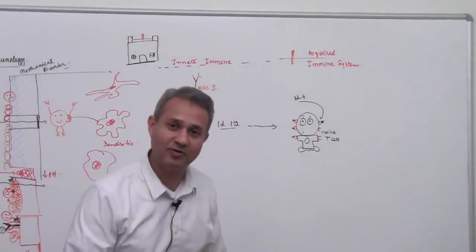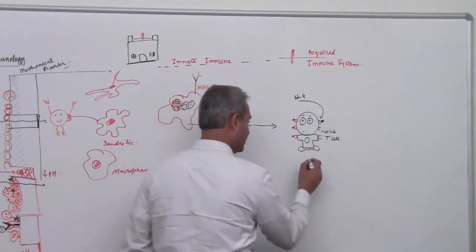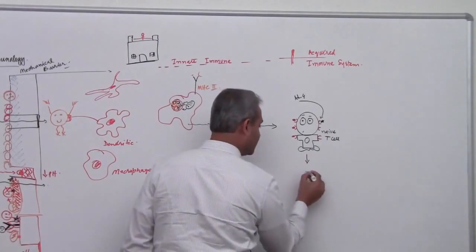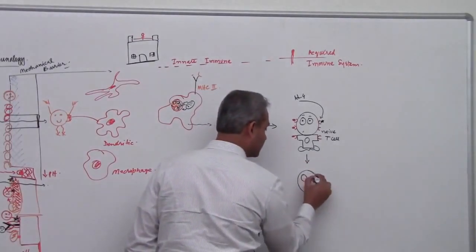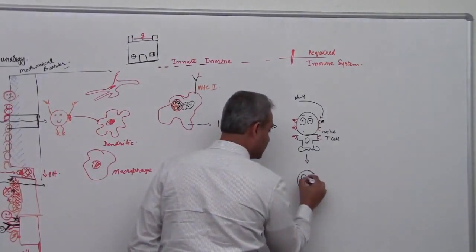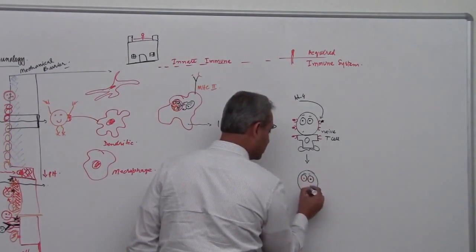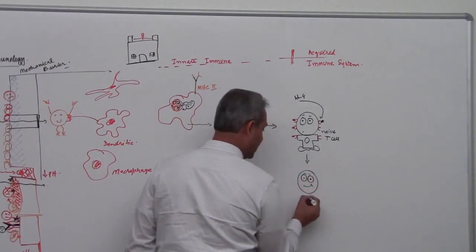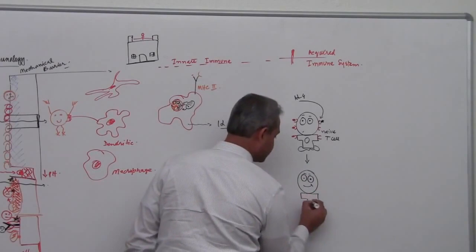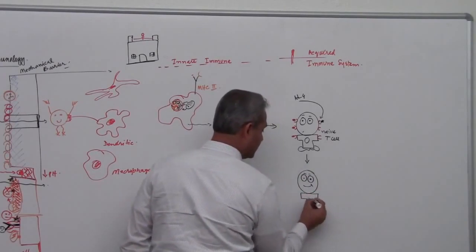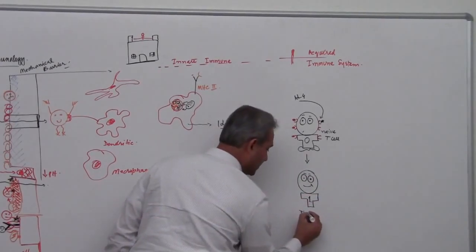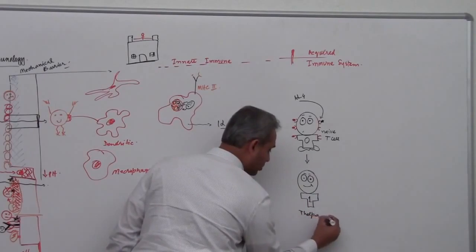All of a sudden he says, oh yes I know what am I supposed to do. So here, he gets converted into a more happy and sharp looking T helper 1, T helper 1.